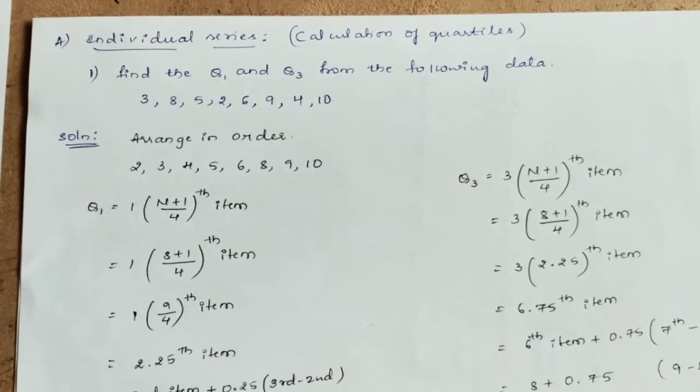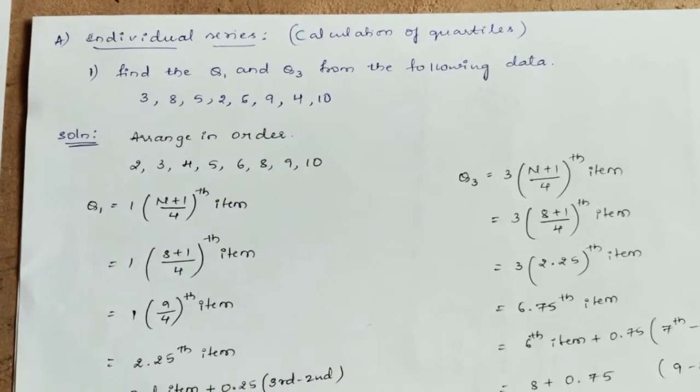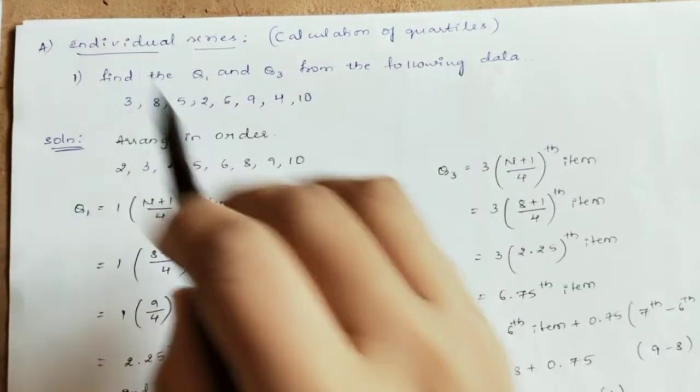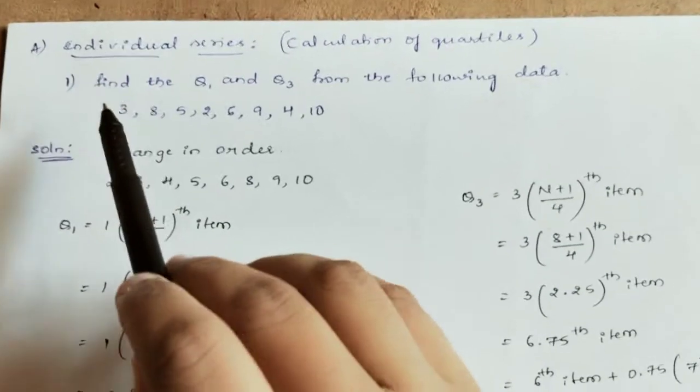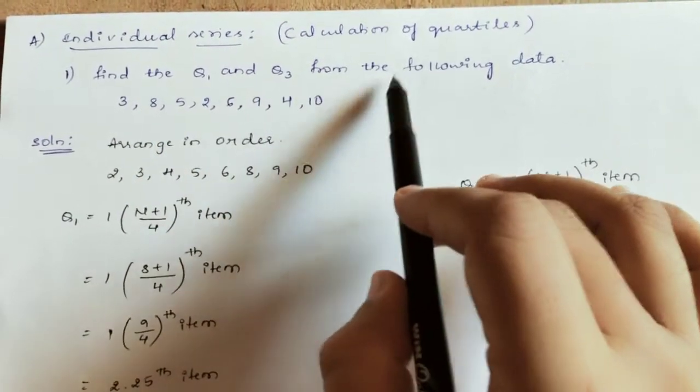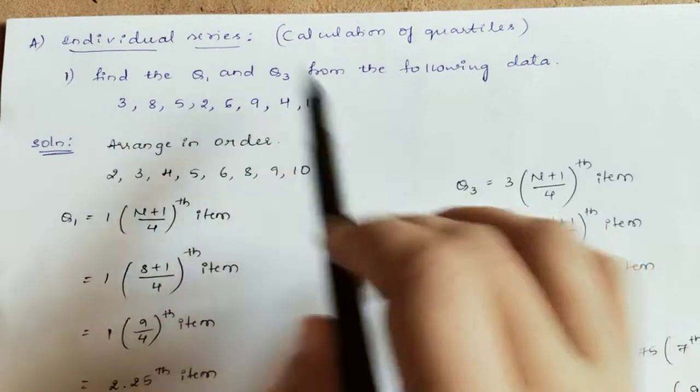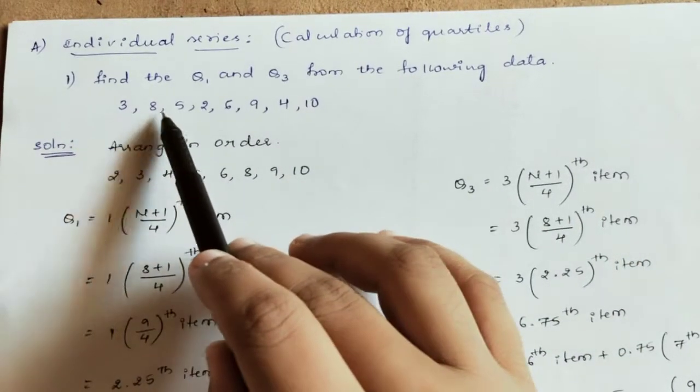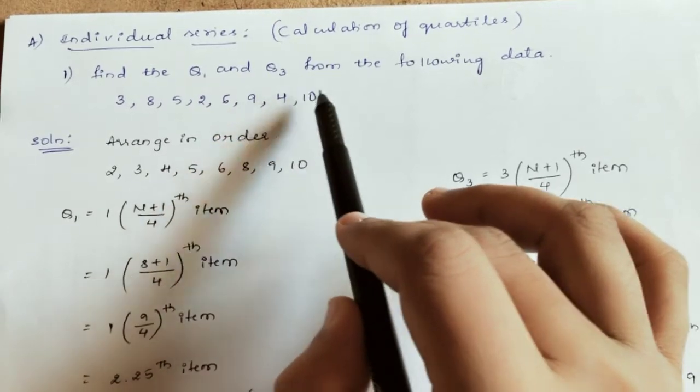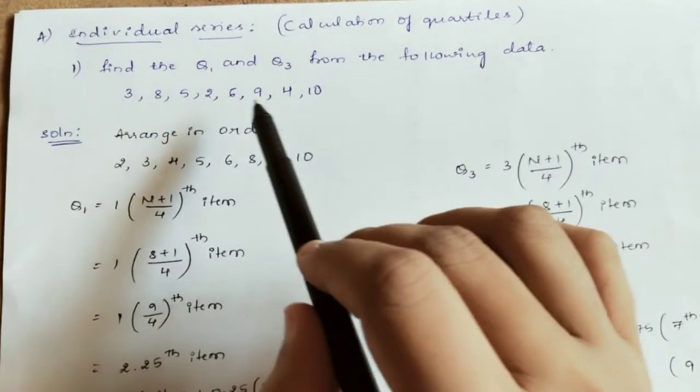Hello my dear students, now we will discuss problems on the quartiles. First we will start with the individual series. Here is the question: find Q1 and Q3 from the following data. This is the given series: 3, 8, 5, 2, 6, 9, 4, 10.